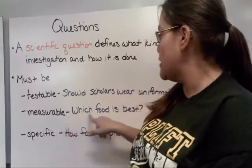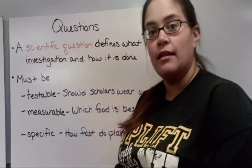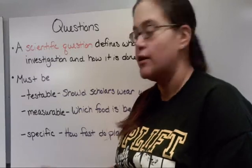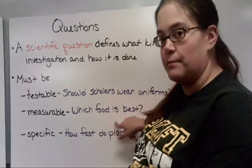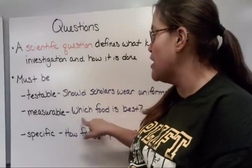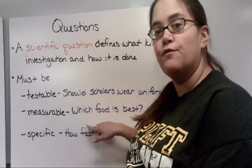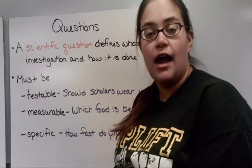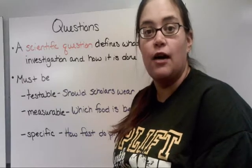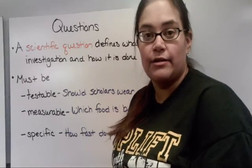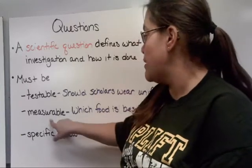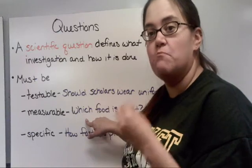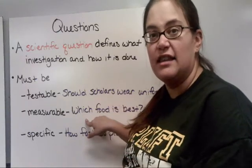Measurable: 'Which food is best?' — how can you measure that? What data would you write down? There's no way to test this. You could, however, do an experiment on which food has the most calories; that would be a descriptive investigation where you find out how many calories a food has. You need to be able to write down data, make measurements and observations.